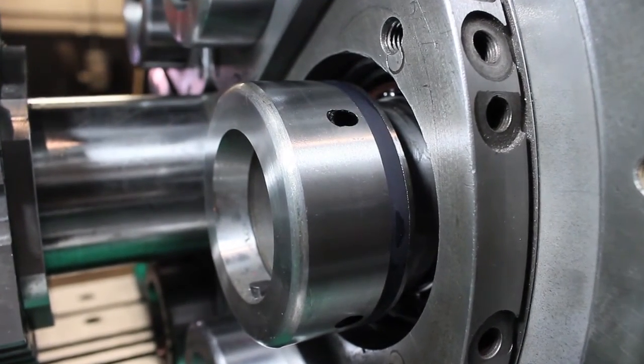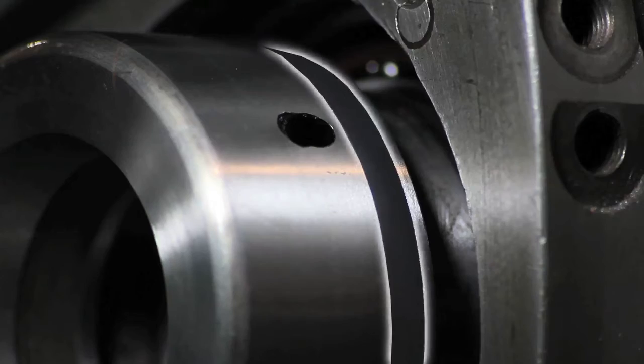The spindle and rear bearing spacer is then inlaid with an aluminum oxide ceramic-ware surface.